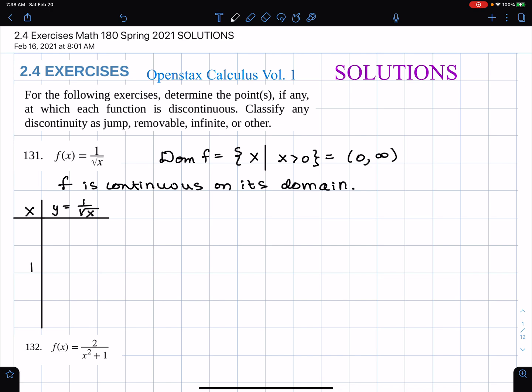I'm going to plot a few points. This function takes the square root of a number, and then its reciprocal. The square root of one is one, reciprocal is one. Four is a perfect square, the square root of four is two, reciprocal a half. Nine, the square root of nine is three, reciprocal one-third. One-fourth, this square root is half, reciprocal is two.